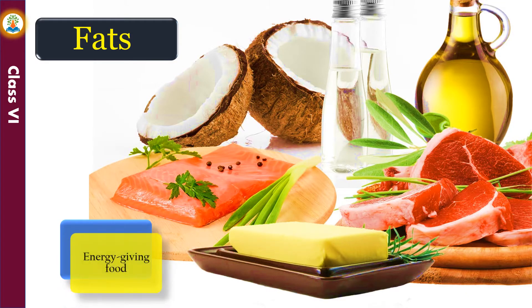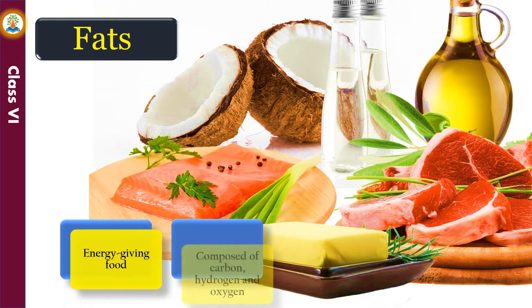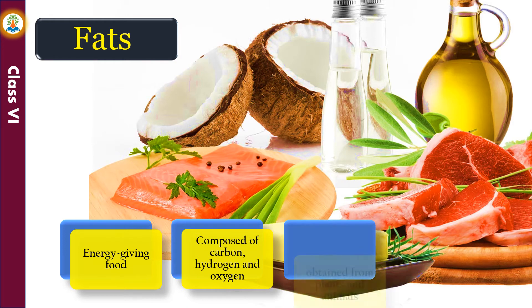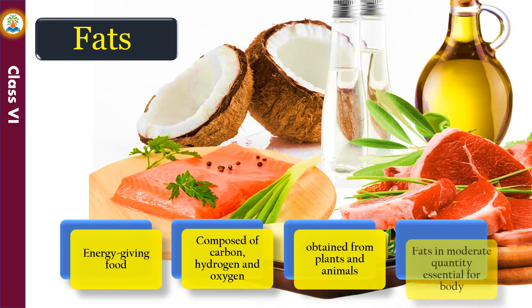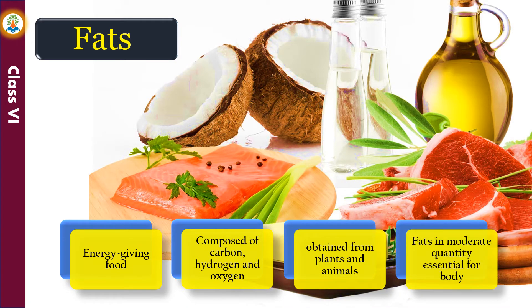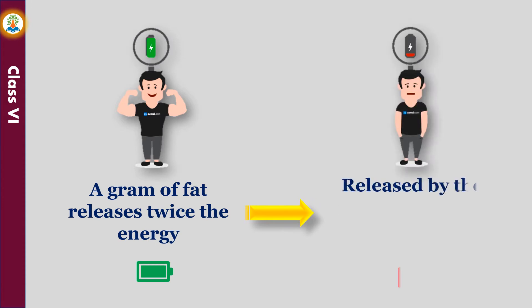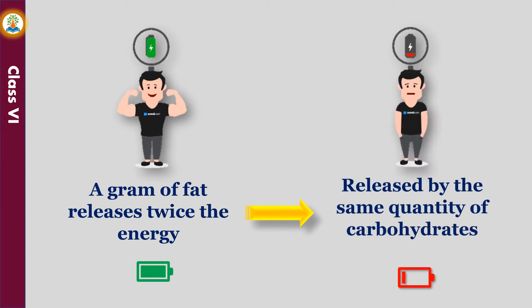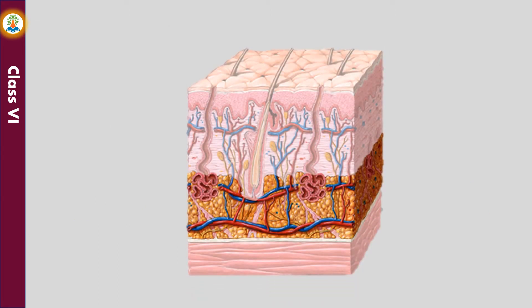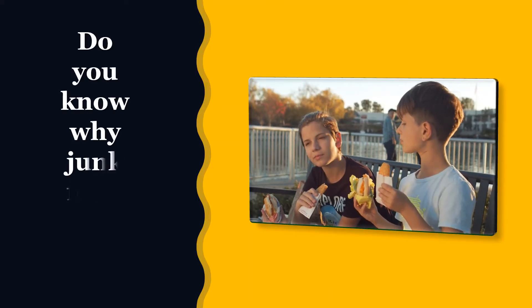Fats are also energy-giving foods, composed of carbon, hydrogen, and oxygen. Fats are obtained from both plants and animals. A gram of fat releases twice the energy released by the same quantity of carbohydrates. Intake of fats in moderate quantities is essential for our body; fats form a layer under the skin and provide us warmth.